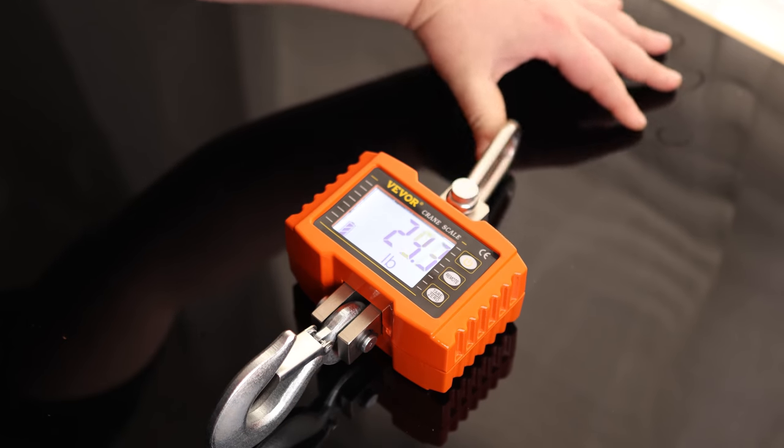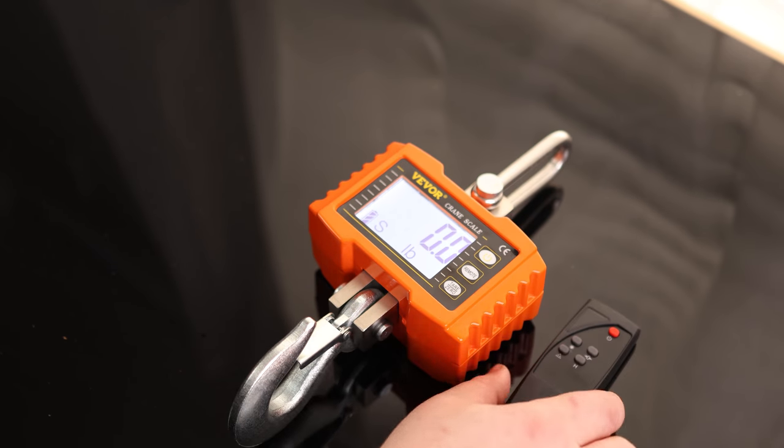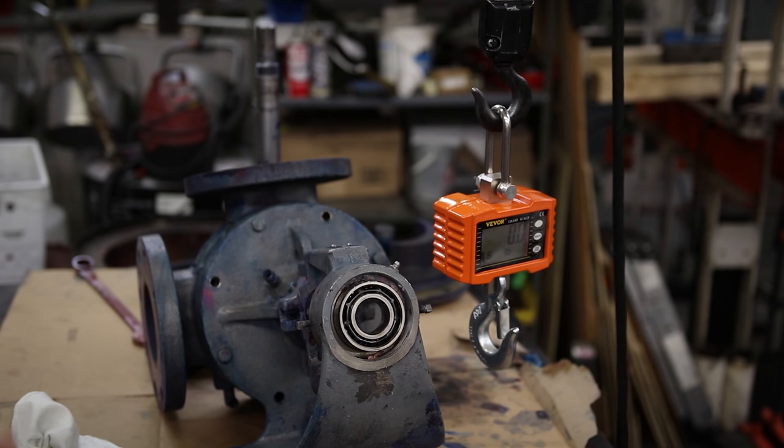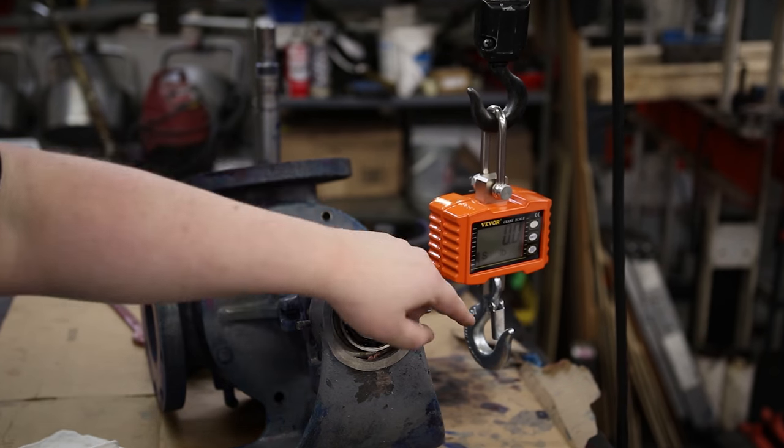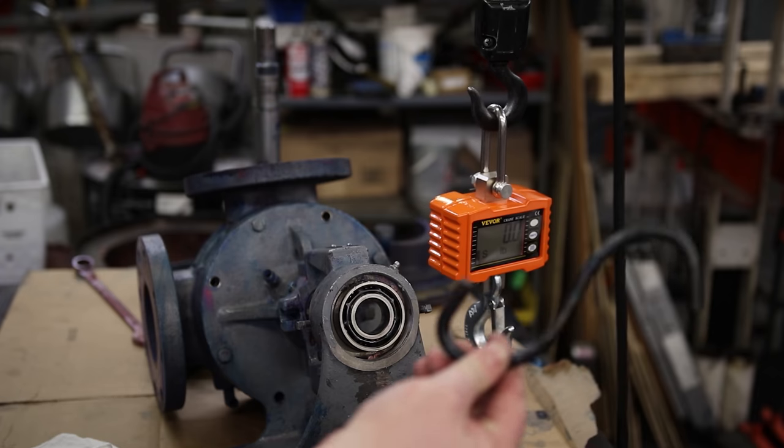I do like how fast that updates as well. So let's go ahead and take this guy to the shop and put it to use. So this will actually be a good opportunity to use the tare function because this hook won't fit over this loop.